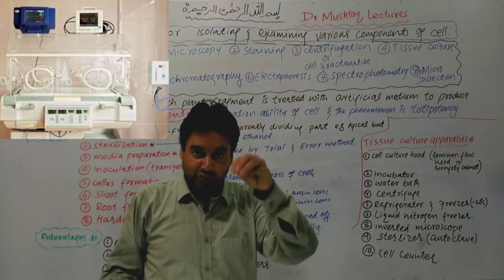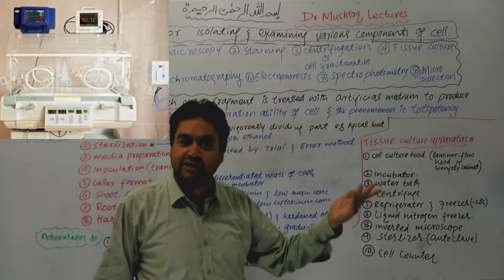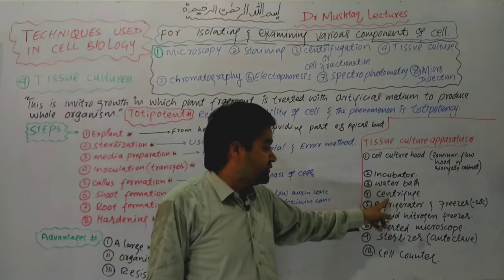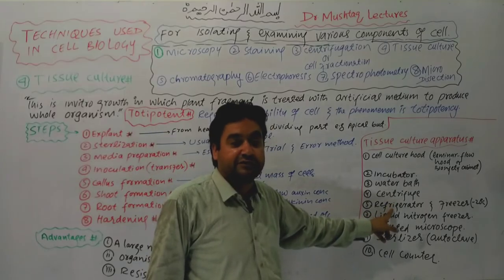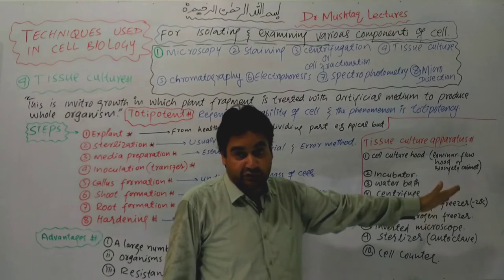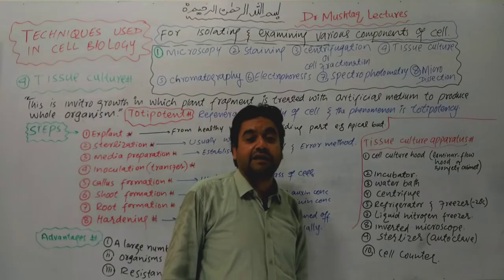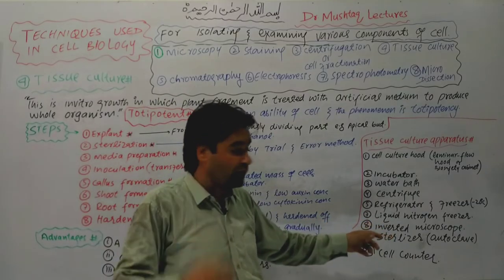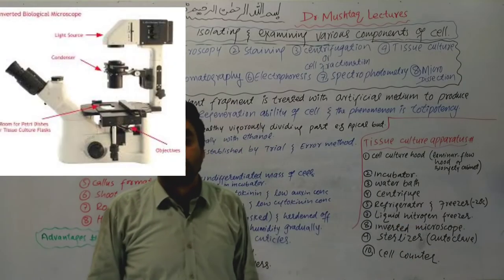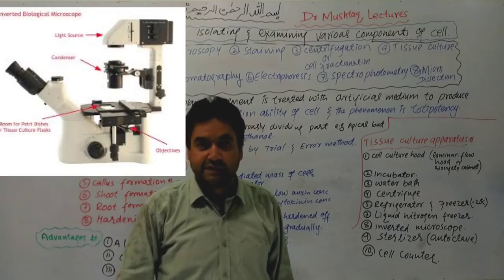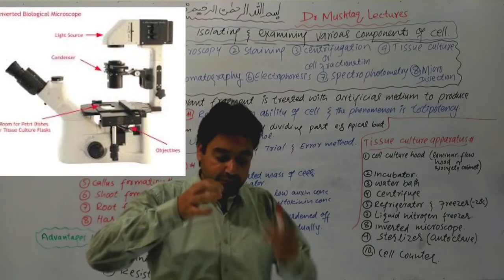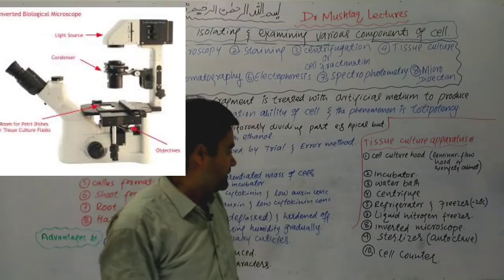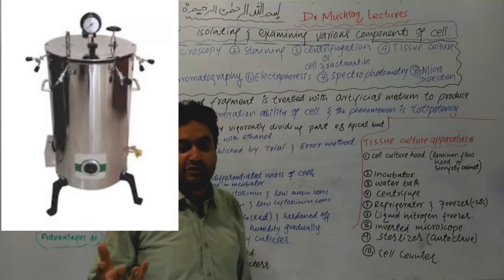Other equipment includes water baths and centrifuge machines for separating samples. A refrigerator is maintained at about 27 degrees centigrade, and a freezer at -20 degrees centigrade. A liquid nitrogen freezer is maintained at -196 degrees centigrade for cryo-storage. An inverted microscope is used to observe cells. An autoclave machine is used for sterilization.